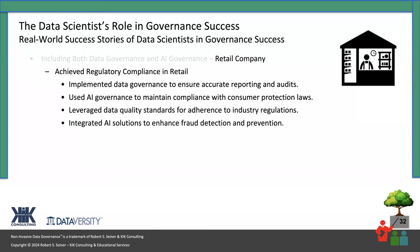The next example is from a retail company that wanted to achieve regulatory compliance. They implemented data governance to ensure accurate reporting and audits, used AI governance to comply with consumer protection laws, making certain that the data they were sharing was data they could share. They leveraged data quality standards, integrated AI solutions to enhance fraud detection and prevention — which is very big within the retail space.